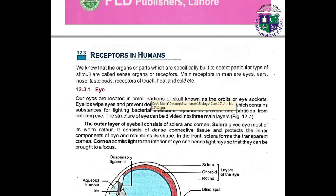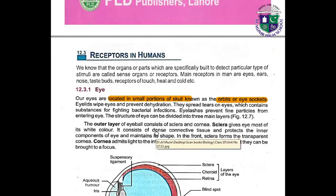First, what is the location of the eye? Eyes are located in a small portion of the skull known as the orbits or eye sockets.